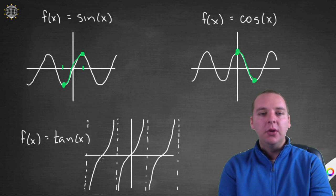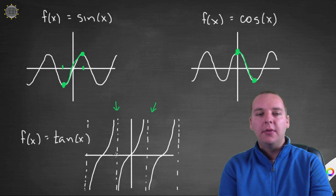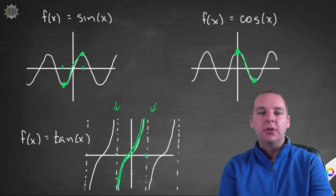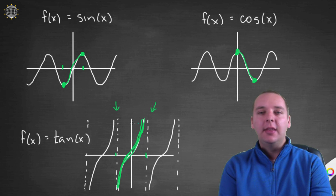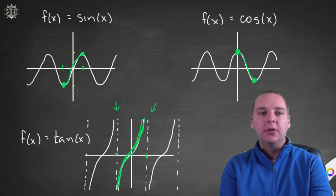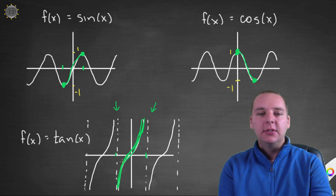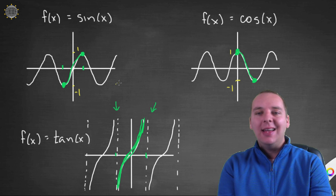Looking at tangent, same issue — where are we going to restrict it? It's a pretty natural idea to restrict it between two of the vertical asymptotes, and that's precisely what we do. We're going to restrict tangent from -π/2 to π/2 and look at just this restricted portion. A great thing about all three of these restricted domains is they still achieve the same range: sine still goes from -1 to 1, cosine still goes from -1 to 1, and tangent still goes from negative infinity to positive infinity. So it's a win-win situation.